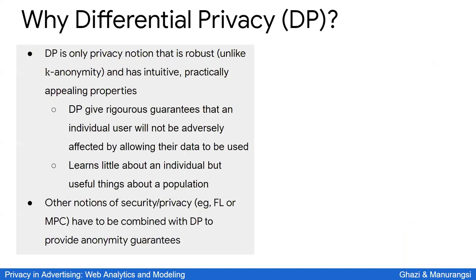Additionally, many known security and privacy techniques — such as multi-party computation (MPC) or federated learning — are sometimes vulnerable to the attacks discussed earlier. Only when combined with techniques like differential privacy or other anonymization methods do they provide formal privacy guarantees. So DP is useful even in conjunction with other techniques.